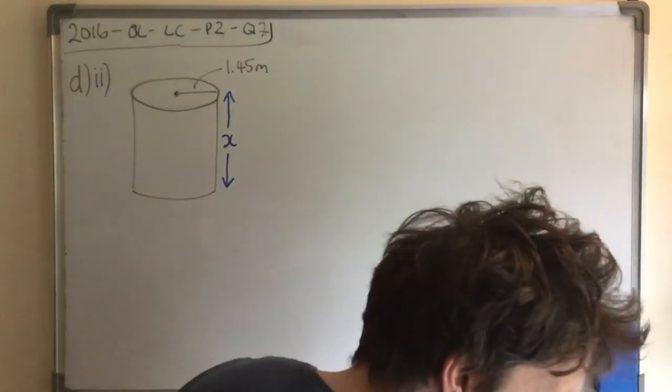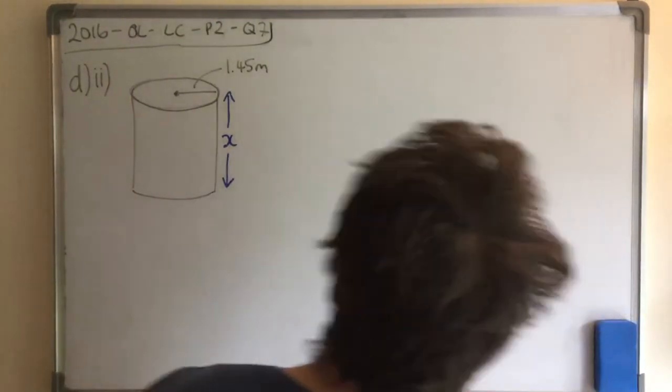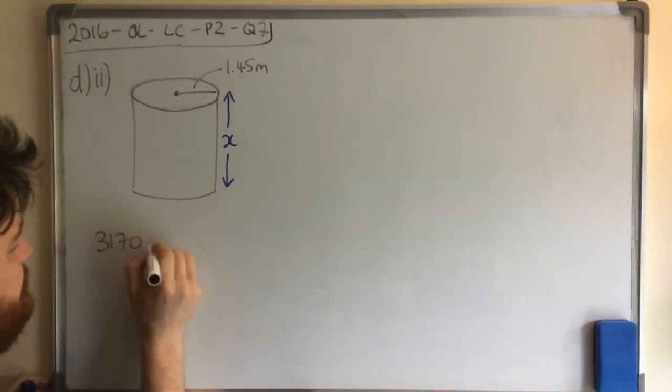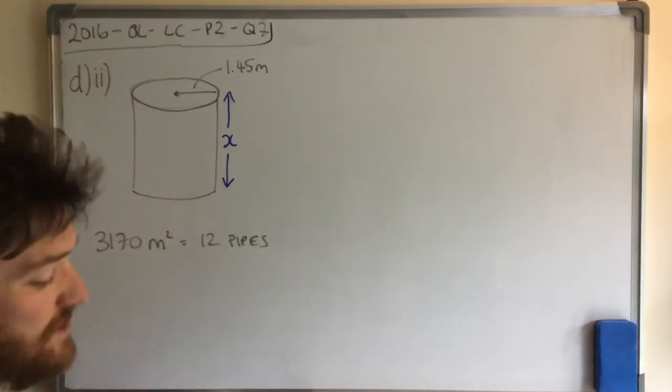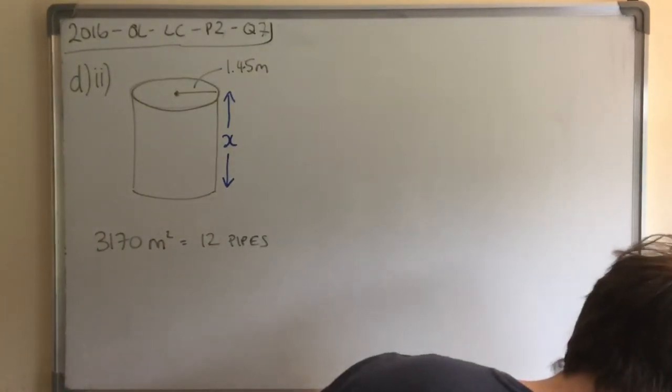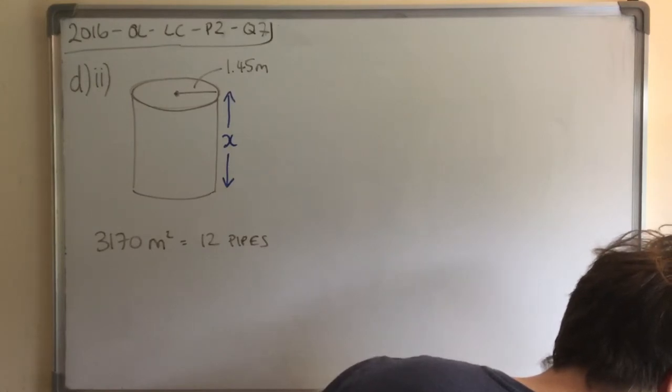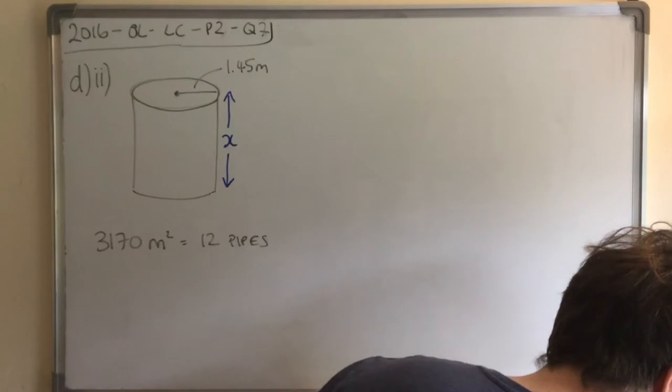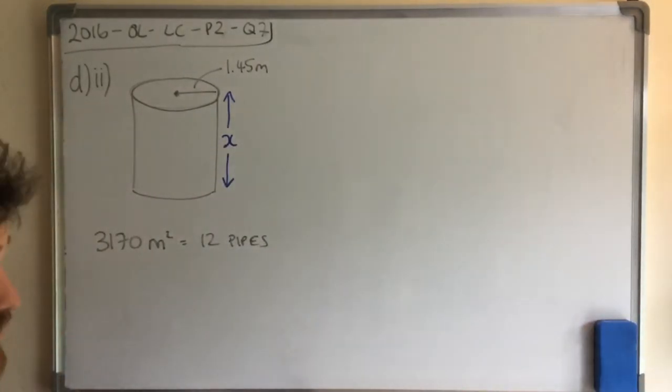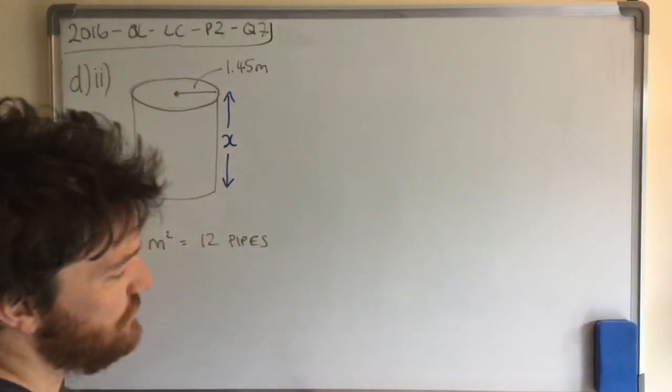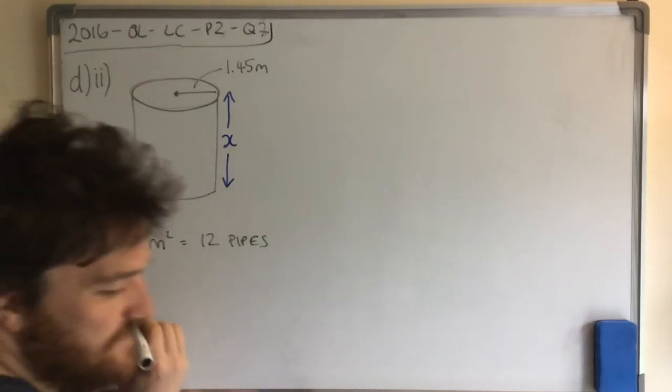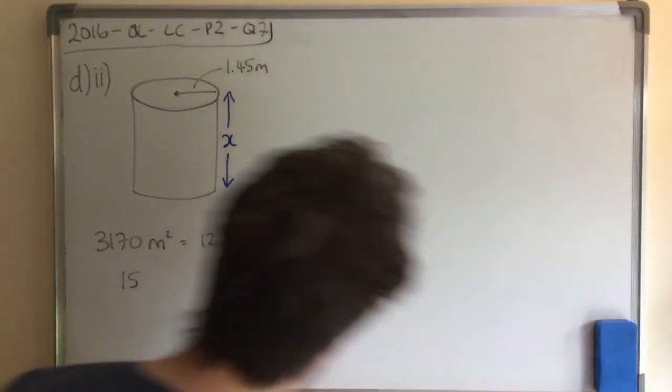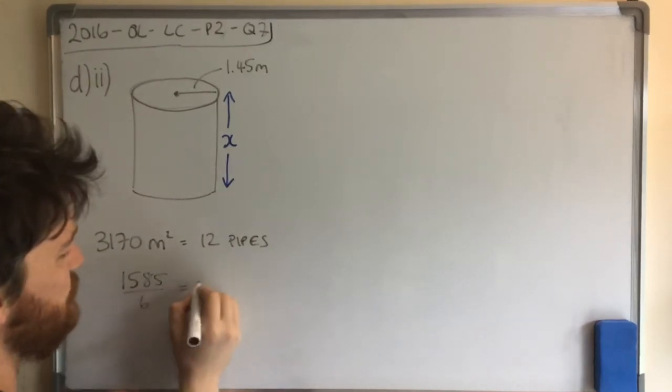Right, a lot to this question. Let's try to find if it's 3170 for 12 pipes. Then let's just find it for one pipe. So 3170 divided by 12 will tell me that for one pipe it's... Now, we get a non-exact answer here. We get 264.16666666. It ends up with a fraction. So what I'm going to do, because I'm going to be super smart, is I'm going to say that it's 1585 divided by 6 is equal to one pipe.